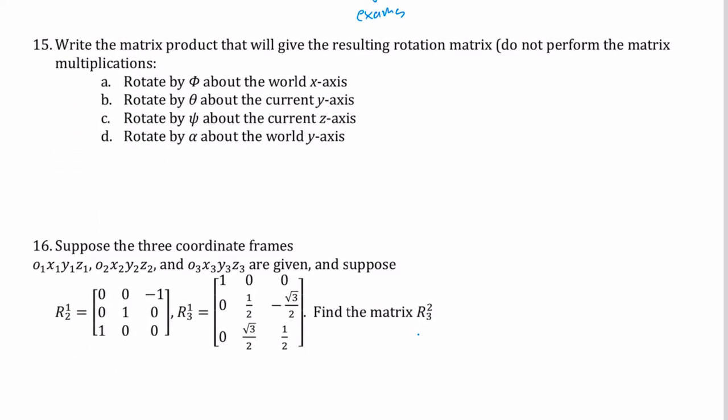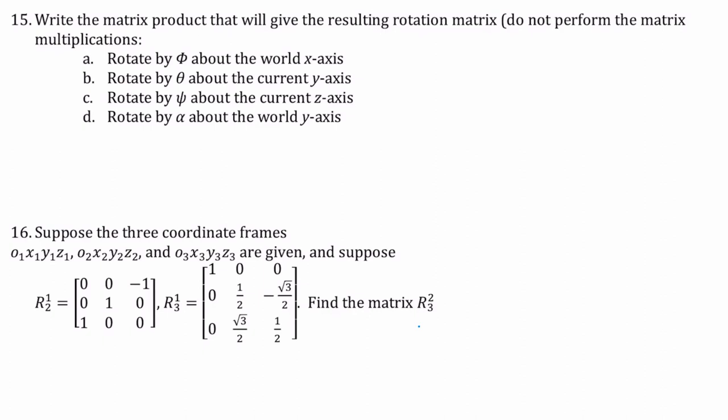Next one we're going to have rotate by, so we got an R_x by phi again. And then we want to go by the current axis, so we're going to post-multiply. And then we're going to go by the current axis, so that's going to be R_z psi. And then we're going to rotate by alpha by the world y-axis, so we're going to pre-multiply. And we get our rotation here. I don't see any simplification that I can do, so I'm done here.